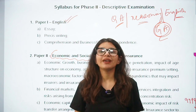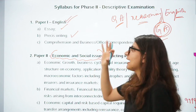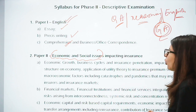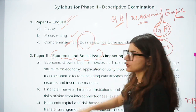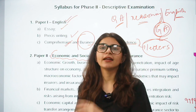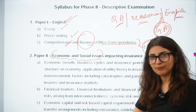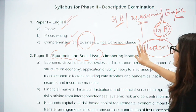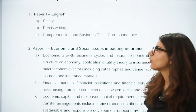Paper 1 is English, which includes essay writing, précis writing, and comprehension — topics we already prepare for RBI Grade B. Business and office correspondence is also included. So Phase 2 Paper 1 is already covered since we prepare all these things for RBI.